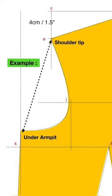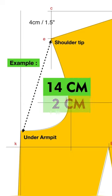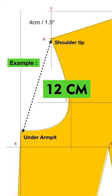For example, if shoulder tip to under armpit measurement is 14 cm, reduce 2 cm, and you will get 12 cm as your cap height.